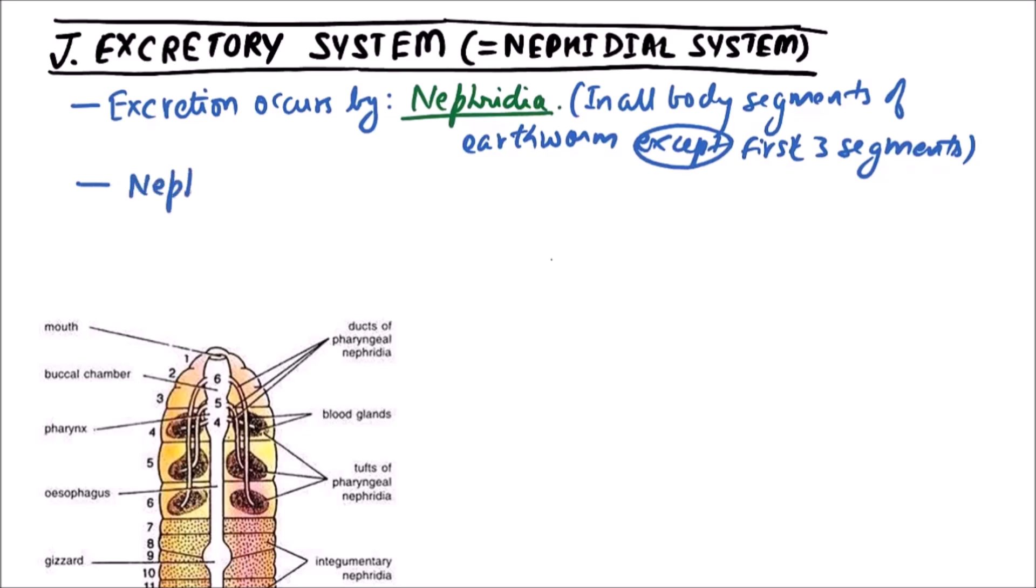Nephridia in earthworm are small sized. That is why these are also known as micronephridia.